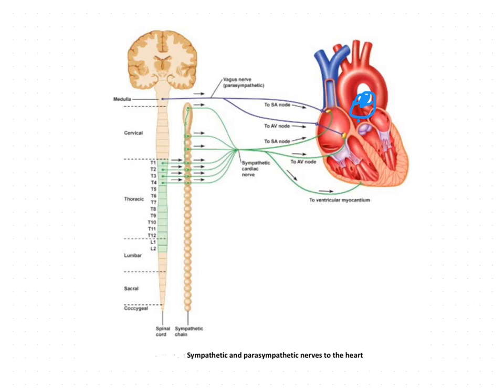The deep cardiac plexus is situated in front of the bifurcation of the trachea, which can be seen on the back side of the arches in the posterior mediastinum. It is located at the level of the bifurcation of the trachea, behind the arch of the aorta.